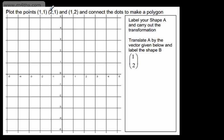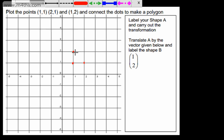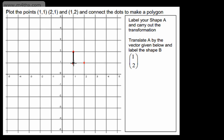We're asked to plot the points (1,1), (2,1), and (1,2) and connect the dots to make a polygon. Often this won't be in the question — you'll already have a polygon drawn. A polygon is simply a multi-sided shape. So (1,1) — x-coordinate is 1, y-coordinate is 1. (2,1) — x is 2, y is 1. And (1,2) — x is 1, y is 2. If we connect this up, what we've got is a little triangle. Let's just change the colour to make it easier to see.